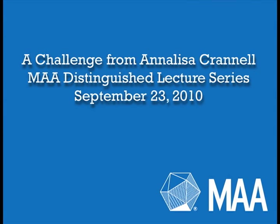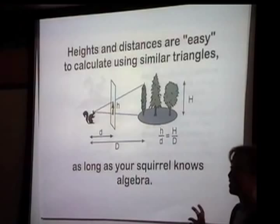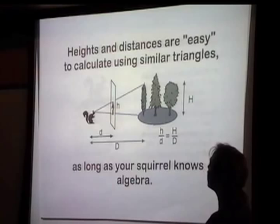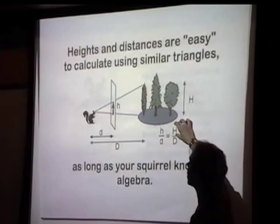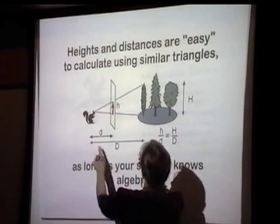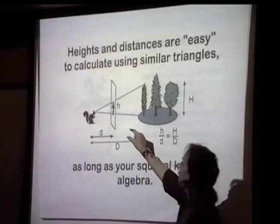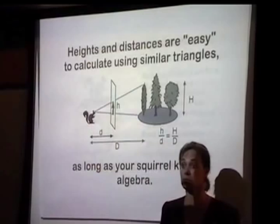This is the only page we're doing today that actually has algebra. If you like algebra, you can do this with algebra. So how do you do this with algebra? If you're trying to measure something in the real world, it has a height — big H. The height of the object in the real world compared to the distance to the object in the real world, that's big D. It's proportional because of similar triangles: the height of the object in the picture compared to the distance to the picture.